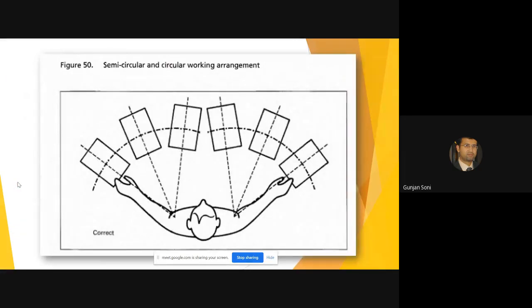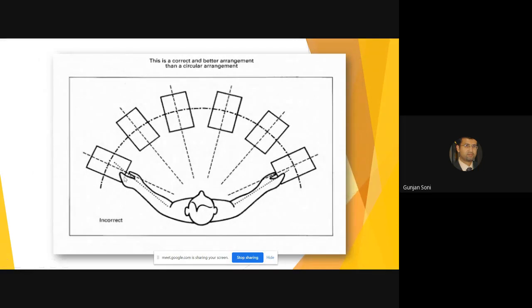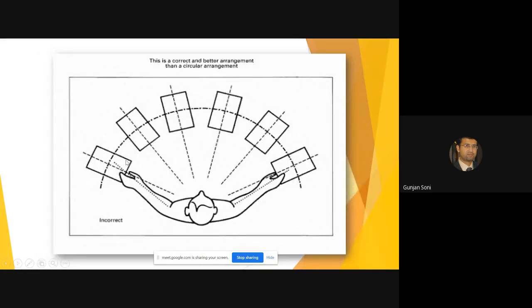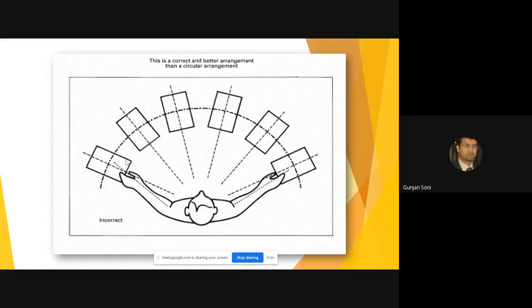You can see semicircular and circular working arrangement. What is correct and what is incorrect? This is incorrect, this is a circular arrangement and this is a semicircular arrangement. Because you can see over here, it is spanning more in circular arrangement. The arc is larger which makes it uncomfortable as well as it occupies the central position which is not good.